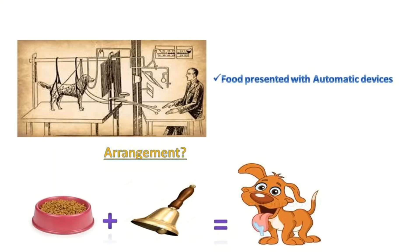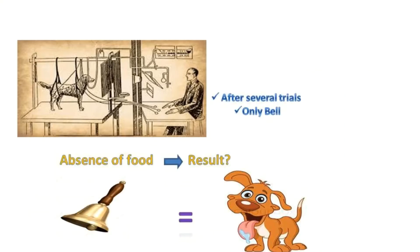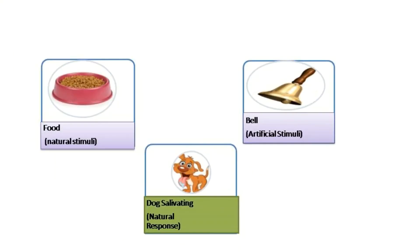This activity was repeated several times and every time the amount of saliva secreted was measured. After several trials, the dog was given no food but the bell was still rung. Even in the absence of food, it was observed that the dog was still salivating. It was found that in the absence of food, the ringing of the bell caused the dog to secrete saliva.